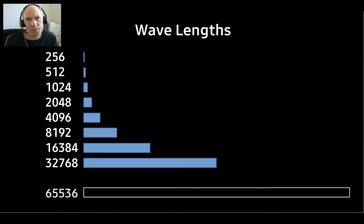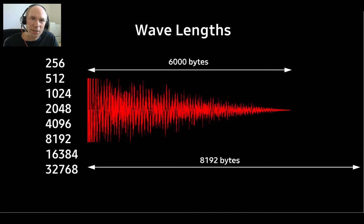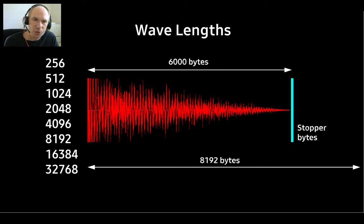There's a problem: oscillators can only play waves of certain lengths. Only 8 values are allowed — 256 bytes, 512 bytes, 1024 bytes, and so on. In fact, the largest wave that can be played is only half the size of the sound RAM. That's crazy. For example, if our instrument is 6000 bytes long, we have to set up the oscillator to play a wave of 8192 bytes, and to force the oscillator to stop after 6000 bytes, we add stopper zero bytes at the end.